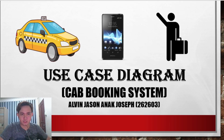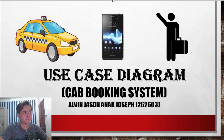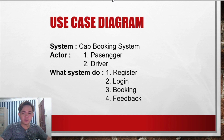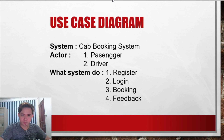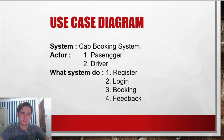Now we will go to the use case diagram. I would like to introduce myself — my name is Alvin Jason, and my metric number is 262603. For our use case diagram, the system is named the cab booking system, similar to GoCar and Grab. We have two actors: the first one is passenger and the second one is driver. The system will handle register, login, booking, and feedback.